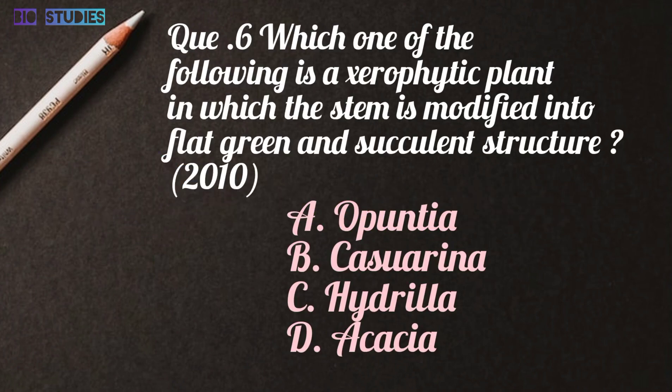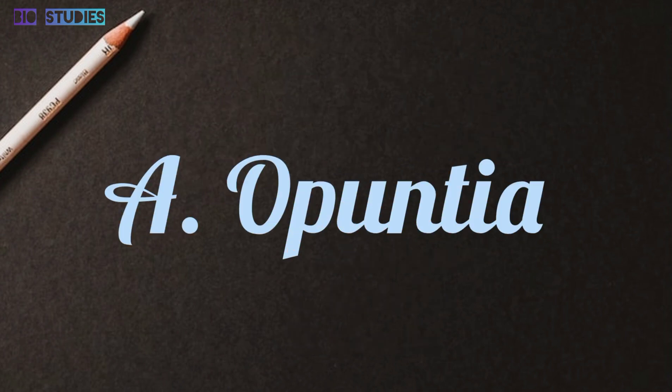Next question: Which one of the following is a xerophytic plant in which the stem is modified into a flat green and succulent structure? Options are: Opuntia, Casuarina, Hydrilla, or Acacia. Answer is A: Opuntia.